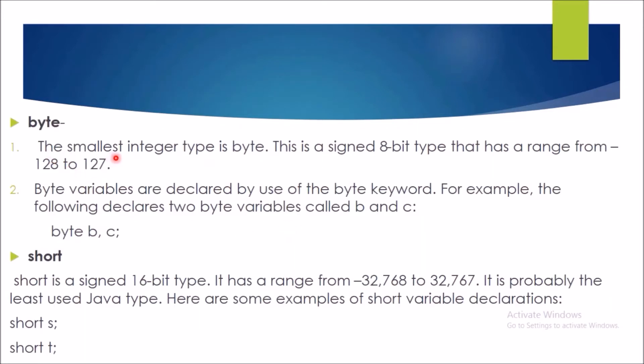Byte, the smallest integer is byte. This is the 8 byte type has range from minus 128 to 127. So, byte variables are declared using keyword byte as shown here.